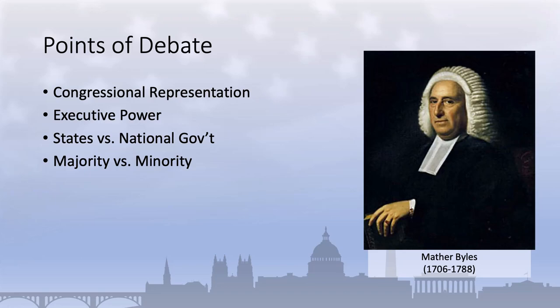To address this tension, the delegates at the Constitutional Convention established a system of government with multiple checks and balances to prevent the abuse of power by any one group or individual. But they also enshrined strong protections for individual rights in the Constitution, most notably through the Fourth Amendment protections against deprivation of life, liberty, or property without due process of law.